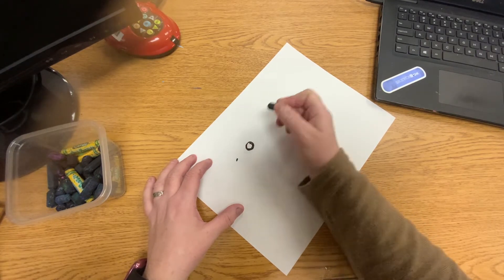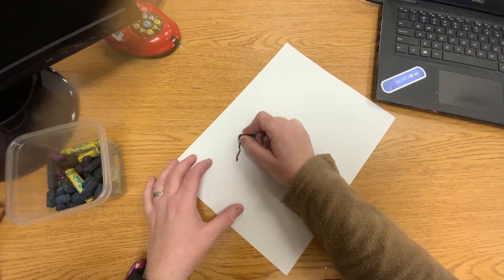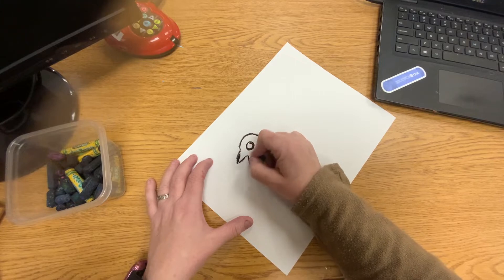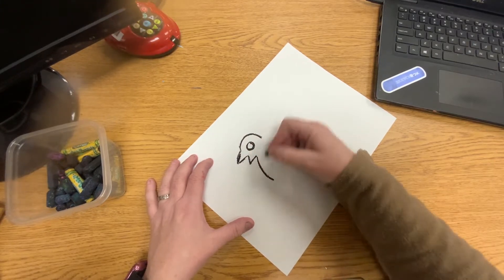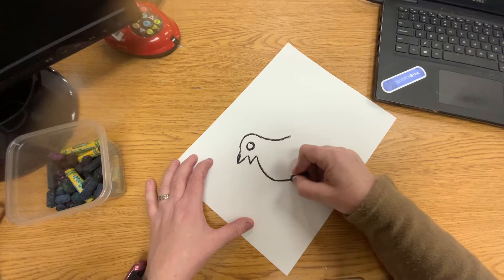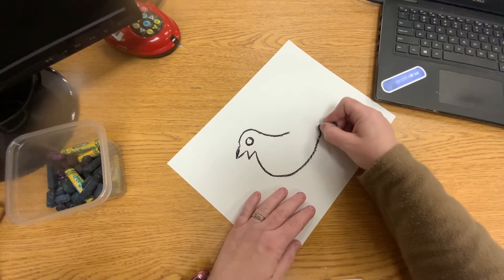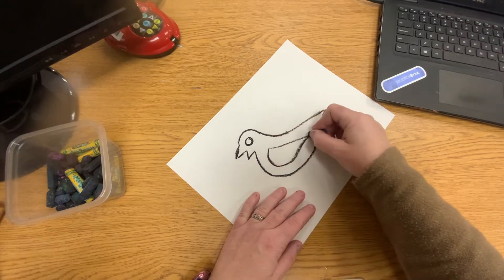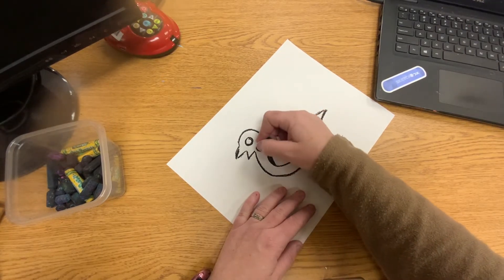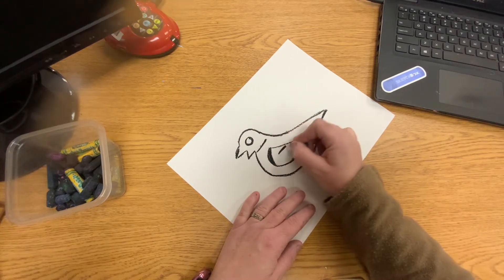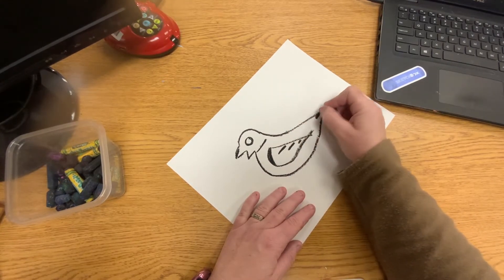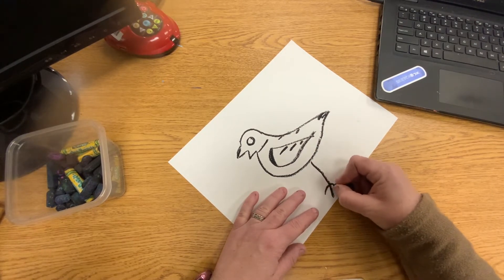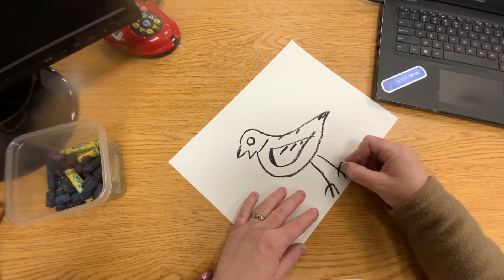So I'm going to start with the bird eye. I make a bird body. I make a bird wing. And then you can add the black stripes and stuff to the bird. You are going to add feet. These are not realistic birds.